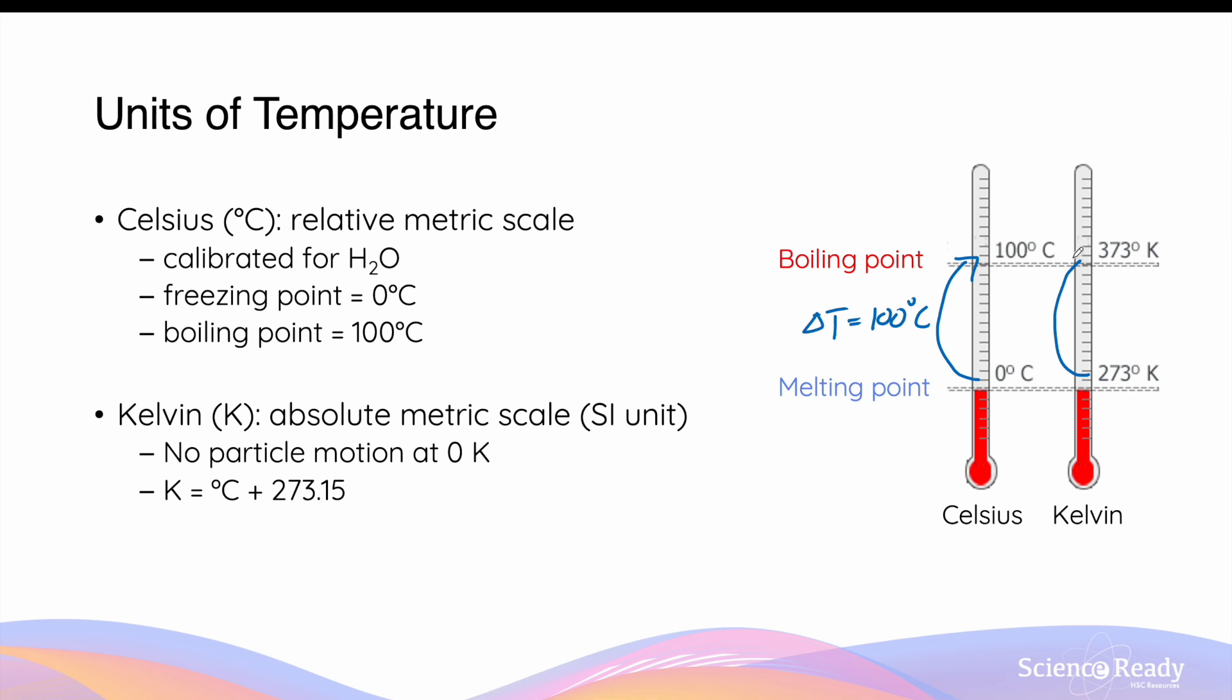This will correspond to the same value of changing temperature if we express them in Kelvins. So if we find the difference between 373 and 273, we'll also get a change in temperature of 100 degrees Kelvins.